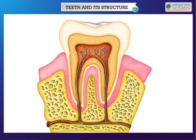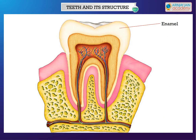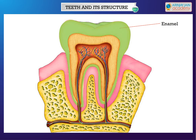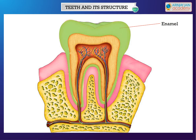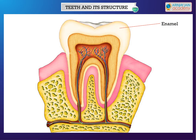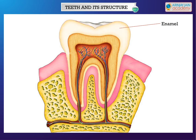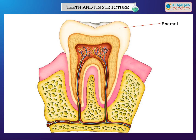A tooth has three layers. Enamel — the outer hard white layer is called the enamel. It is the hardest substance in our body. Enamel protects the tooth from the wear and tear of chewing.